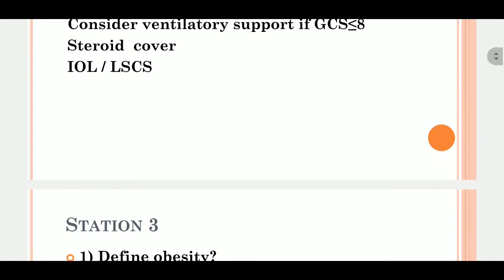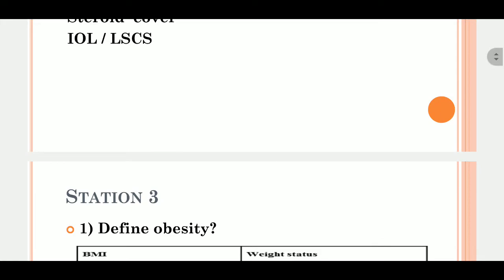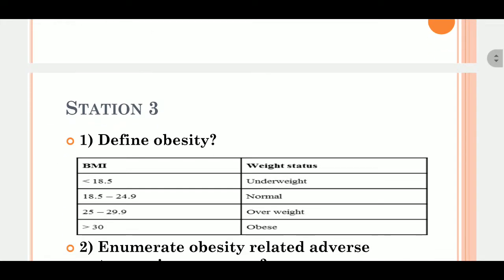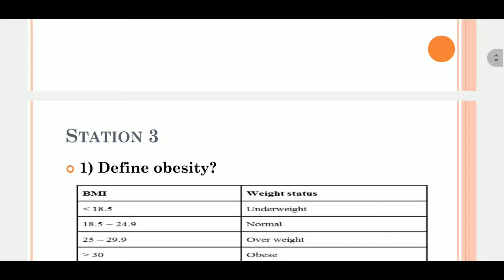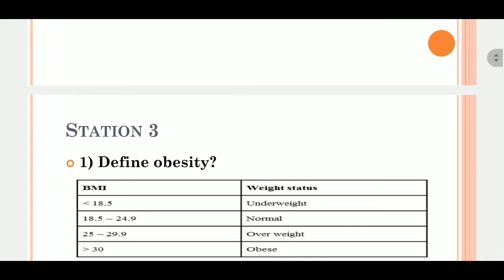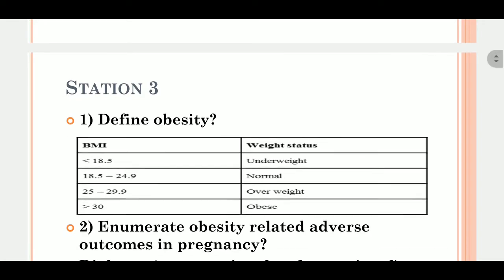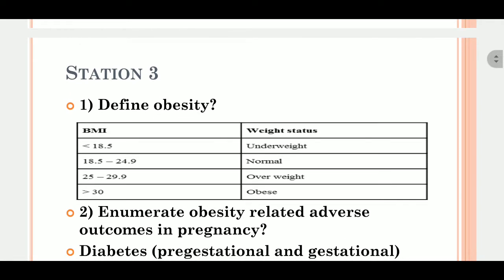Station three: define obesity. Underweight is BMI less than 18.5, normal weight is 18.5 to 24.9, overweight is 25 to 29.9, and more than 30 is obese.